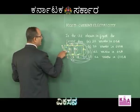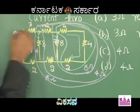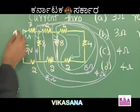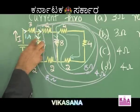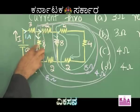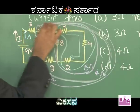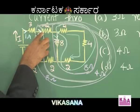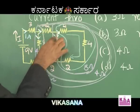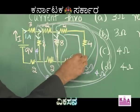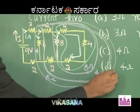9 volt is the voltage; 9 volt by 9 ohm gives us 1 ampere. This 1 ampere splits into 0.5 and 0.5 — because this is 8 ohm and this combination is also giving 8 ohm. This 0.5 splits into 0.25 and 0.25. The same 0.25 flows through the 4 ohm, therefore option D is correct.